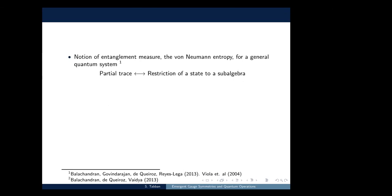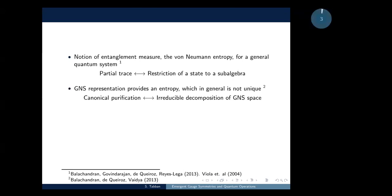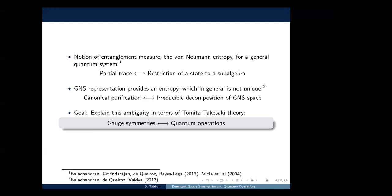They proposed to use restriction of a state to a sub-algebra, using the ideas of Viola et al. proposed in 2004. They proposed to use the GNS representation, which provides a canonical purification. They restrict this state to the original sub-algebra and obtain an entropy. But this entropy is not unique, because the irreducible decomposition of the GNS space is not unique either.